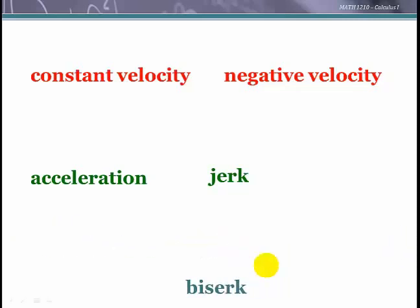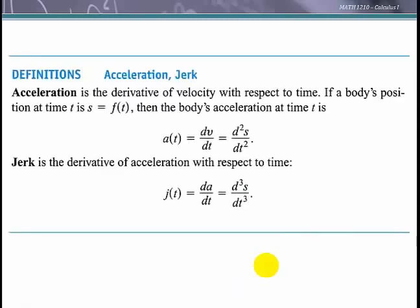To see how velocity is changing, that is acceleration — the derivative of velocity. To see how acceleration is changing, that is called jerk — the derivative of acceleration. Therefore, acceleration is the second derivative of position, and jerk is the derivative of acceleration with respect to time, making it the second derivative of velocity or the third derivative of position.